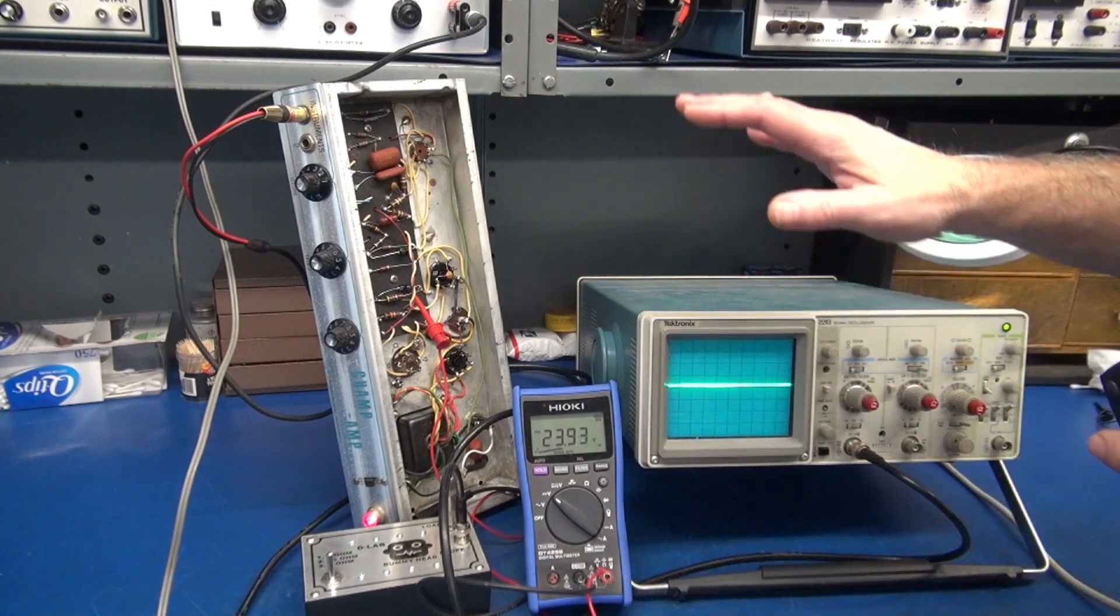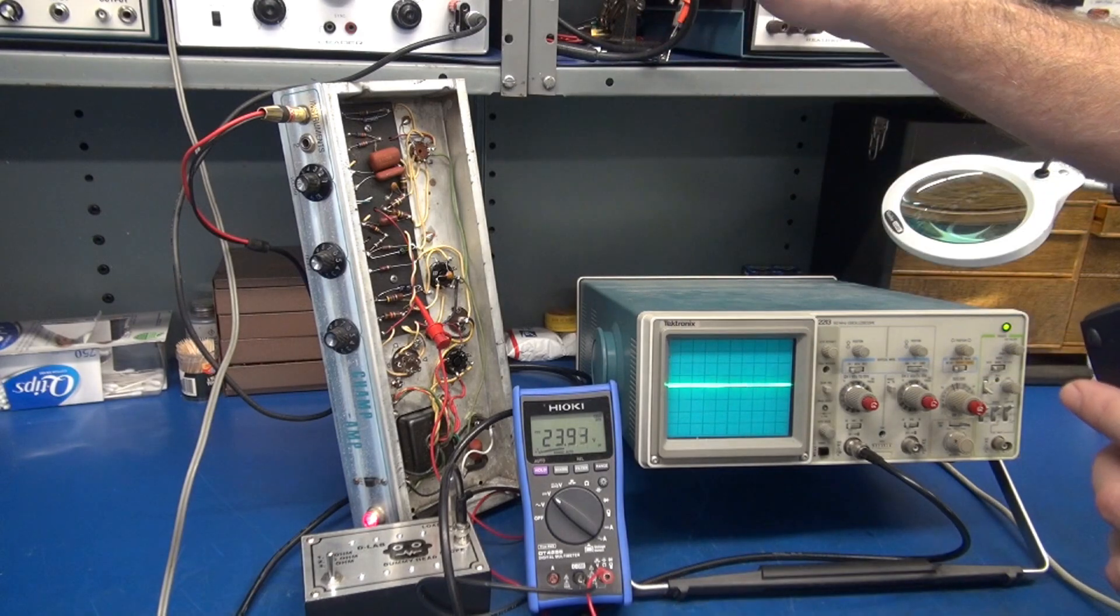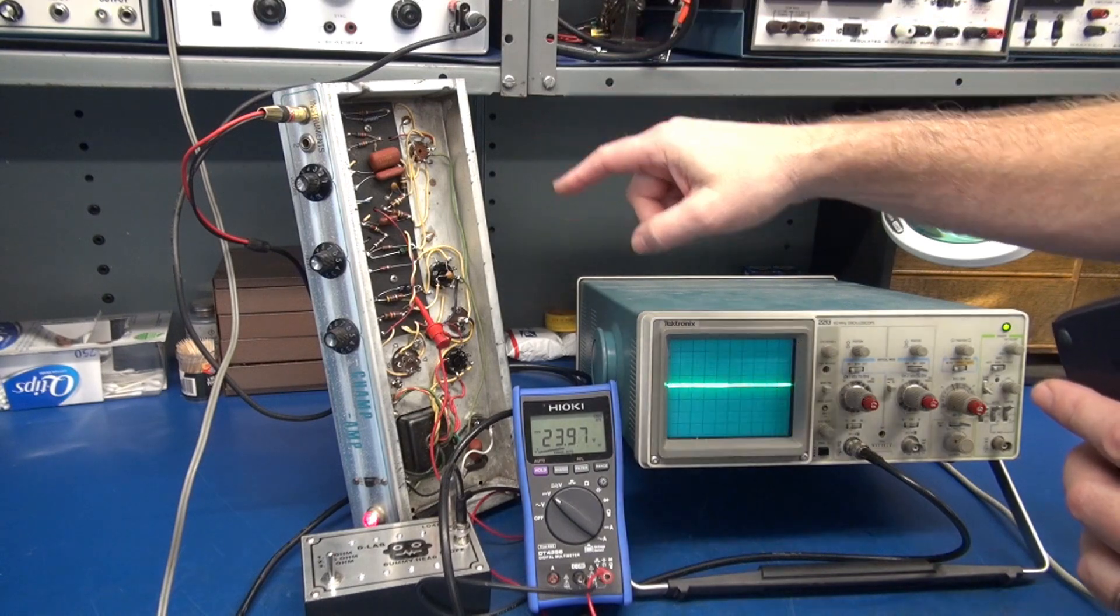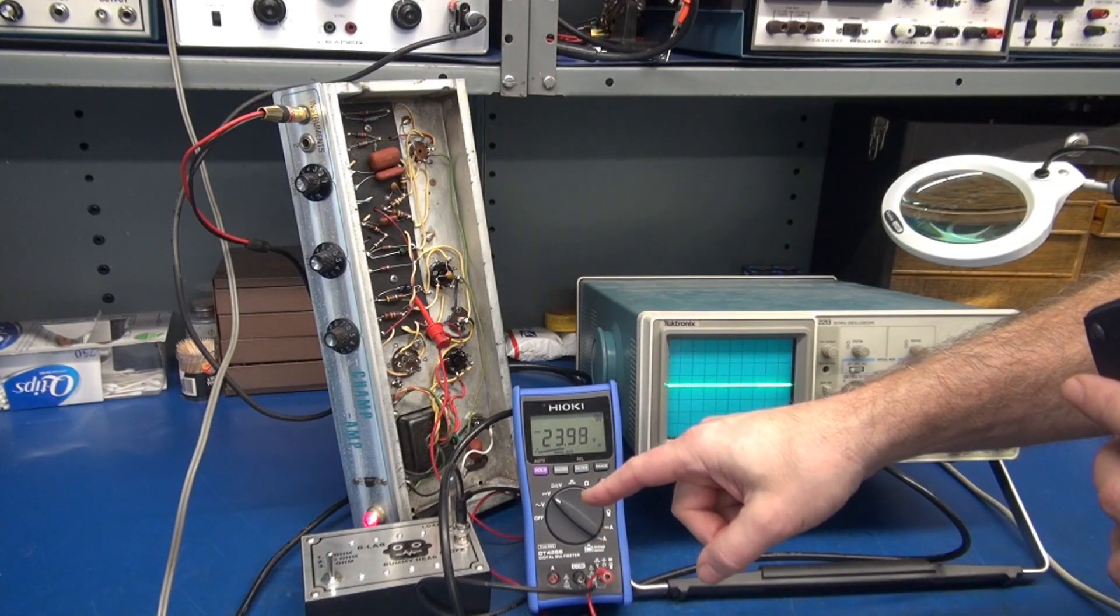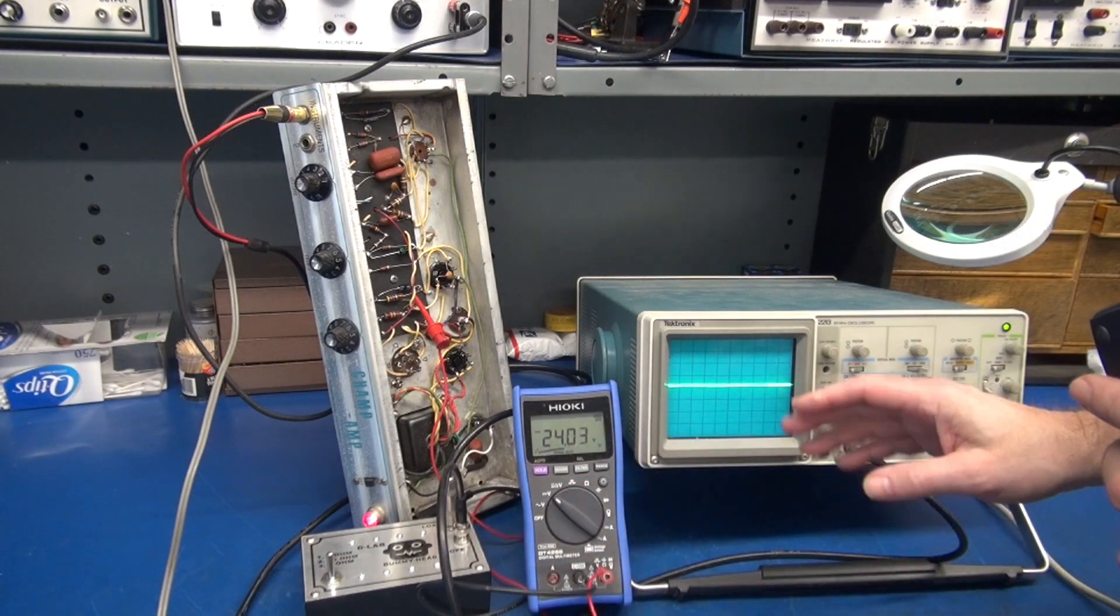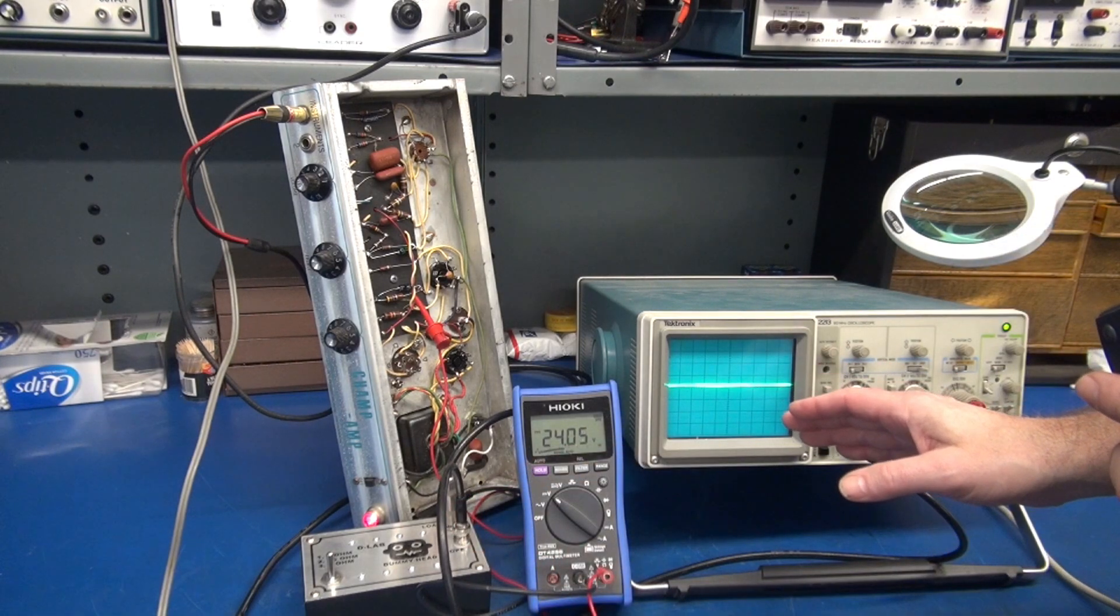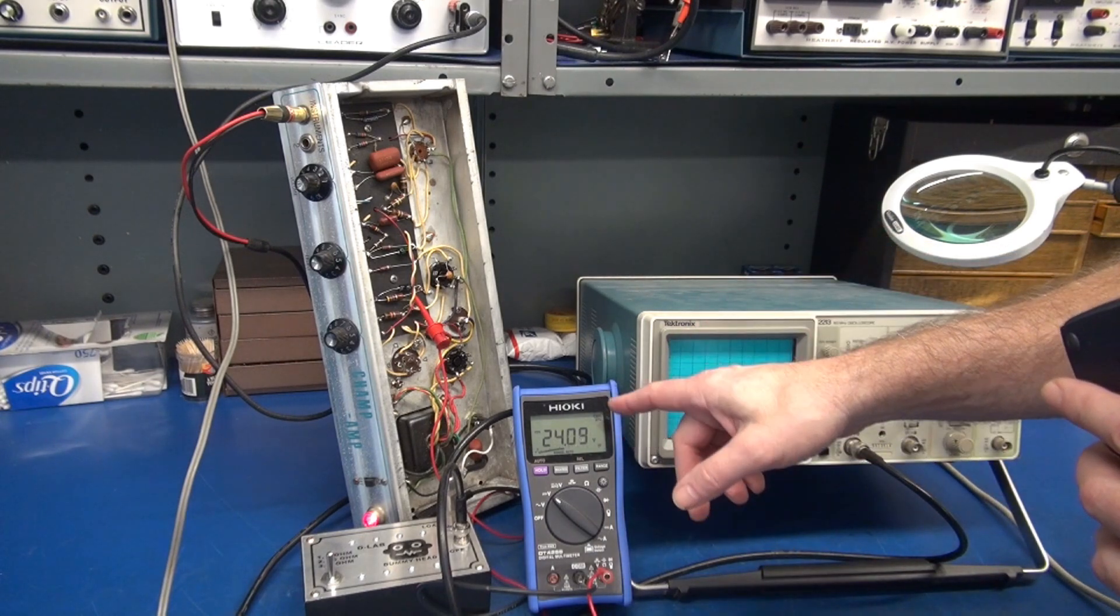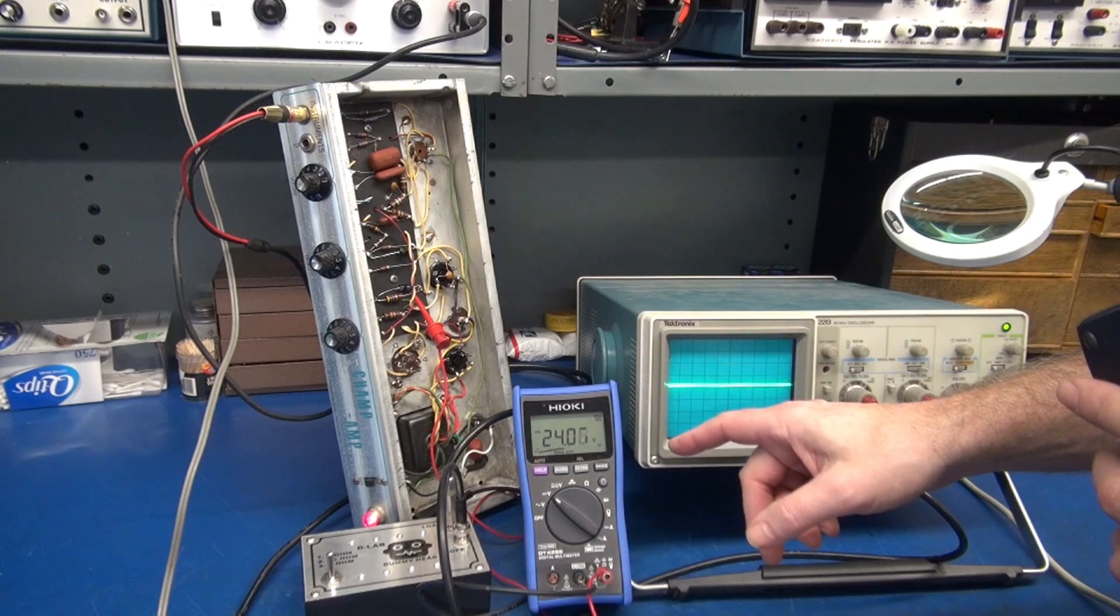So right now I'm running all the original tubes. We're using a signal generator at approximately 700 hertz as our input. We're going into a D-Lab dummy head box. The output is going to the scope so we can see the sine wave being amplified through the Champ. We're also monitoring the bias on the 6V6.